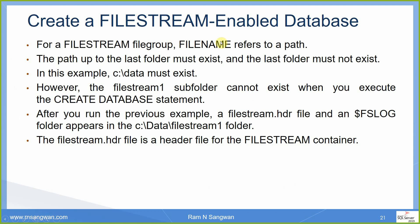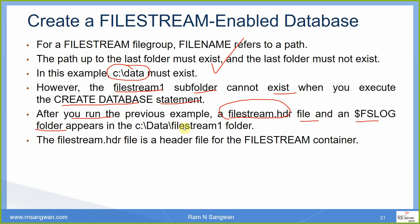For a FileStream file group, the file system path in the file name refers to a directory path. The path up to the last folder must exist, but the last folder must not exist. In this case, C:\Data must exist, but the FileStream subfolder cannot already exist when you run the CREATE DATABASE statement. After running it, a 'filestream.hdr' file and an 'fs_log' folder appear inside that folder. These are created automatically — the header file is the container header for FileStream.